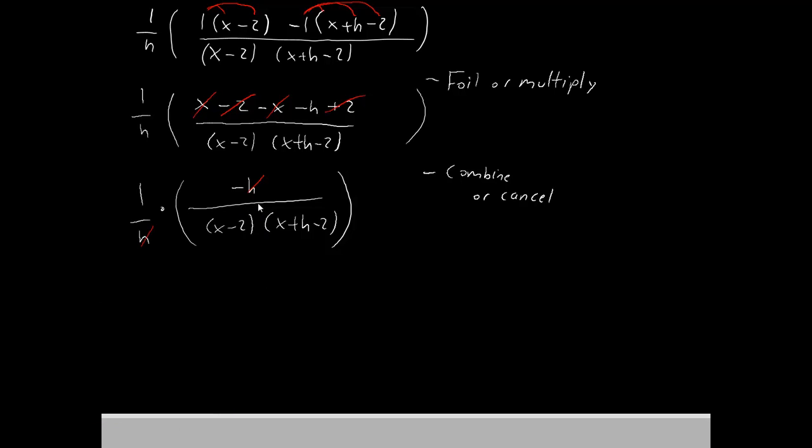So when we cancel those out, on the top of the fraction we no longer have negative h. We now have negative 1. Divided by, again, x minus 2, x plus h minus 2. And it's still multiplied times something, but that something is just 1 over 1, so you don't even have to write it.